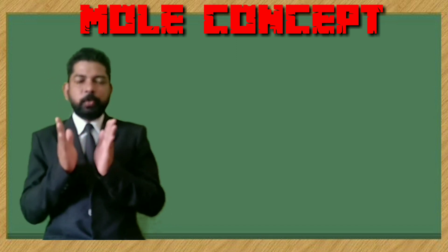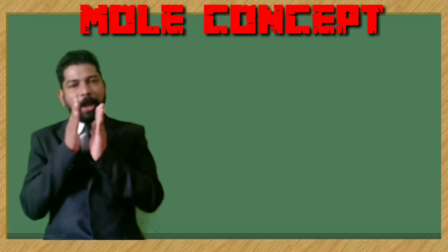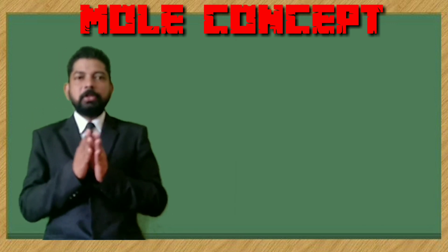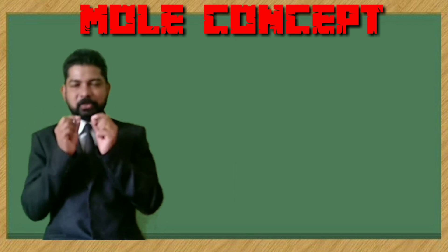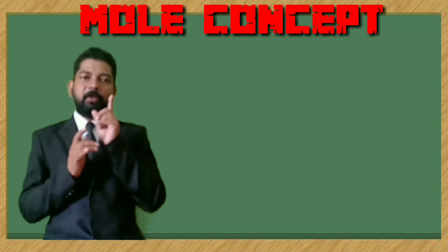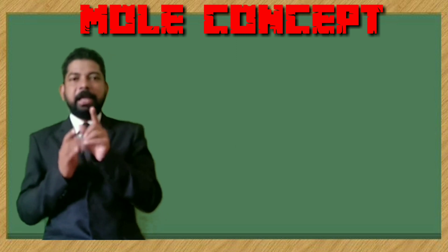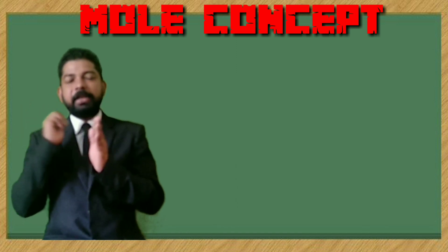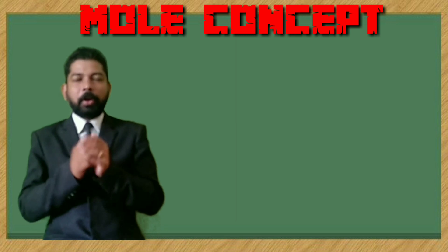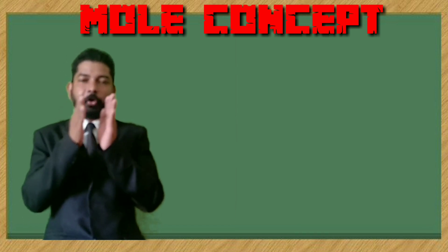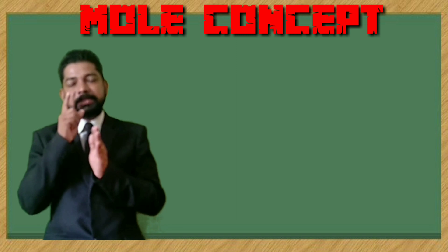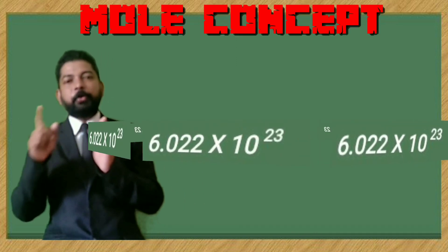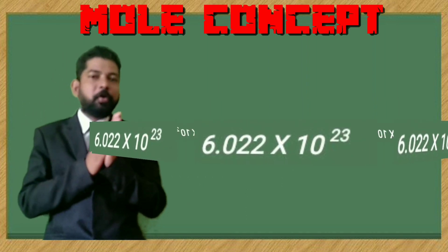It is the same relative atomic mass but the unit will be in grams. So if you have taken one mole of any substance, that mass will be equal to its relative atomic mass in grams. If you have taken a substance equal to its relative atomic mass in grams, it contains Avogadro's number of atoms — that is, 6.022 × 10²³ atoms.